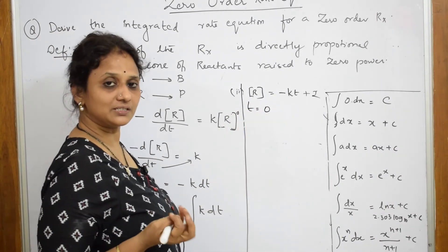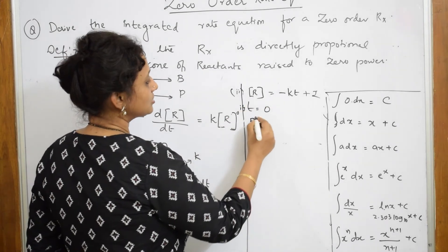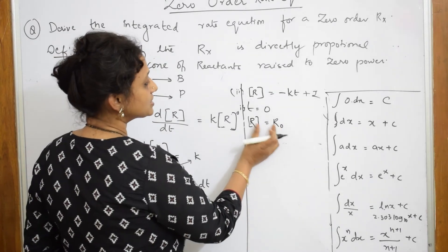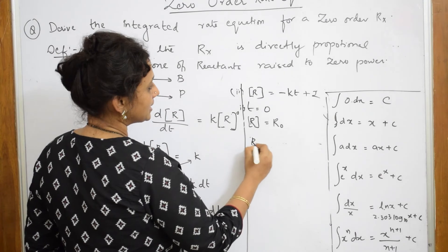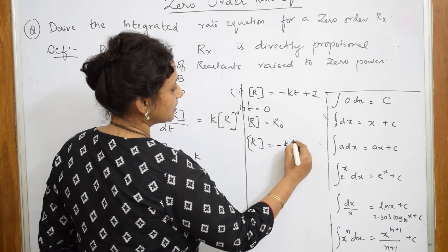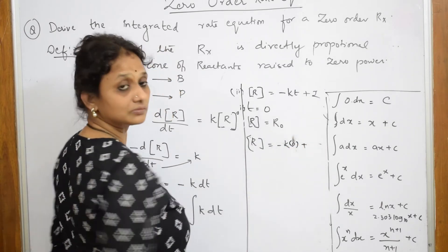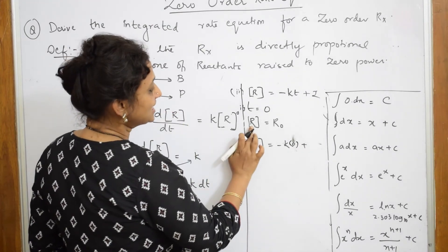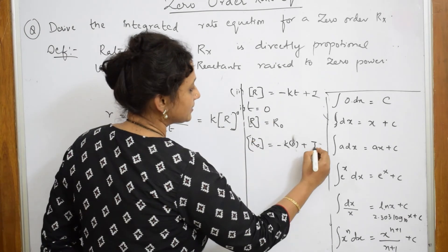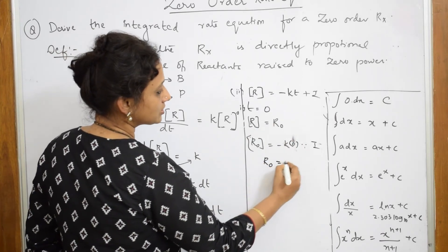Now I apply the initial condition: if t equals zero, the initial concentration of the reactant becomes [R]₀. Substituting into the equation — [R] = −kt + I — with t = 0, [R] becomes [R]₀, so [R]₀ = −k(0) + I, which means I equals [R]₀.